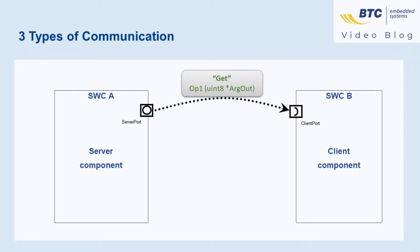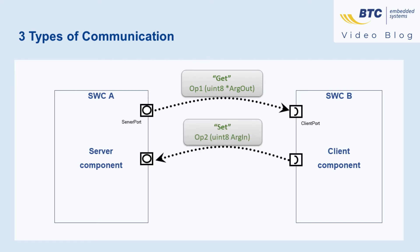Just as a function, the operation can have input and output arguments and we can identify three types of communication. The get communication provides information from the server to the client and is implemented with an output argument in the operation. The set communication pushes information from the client to the server and is implemented with an input argument in the operation.